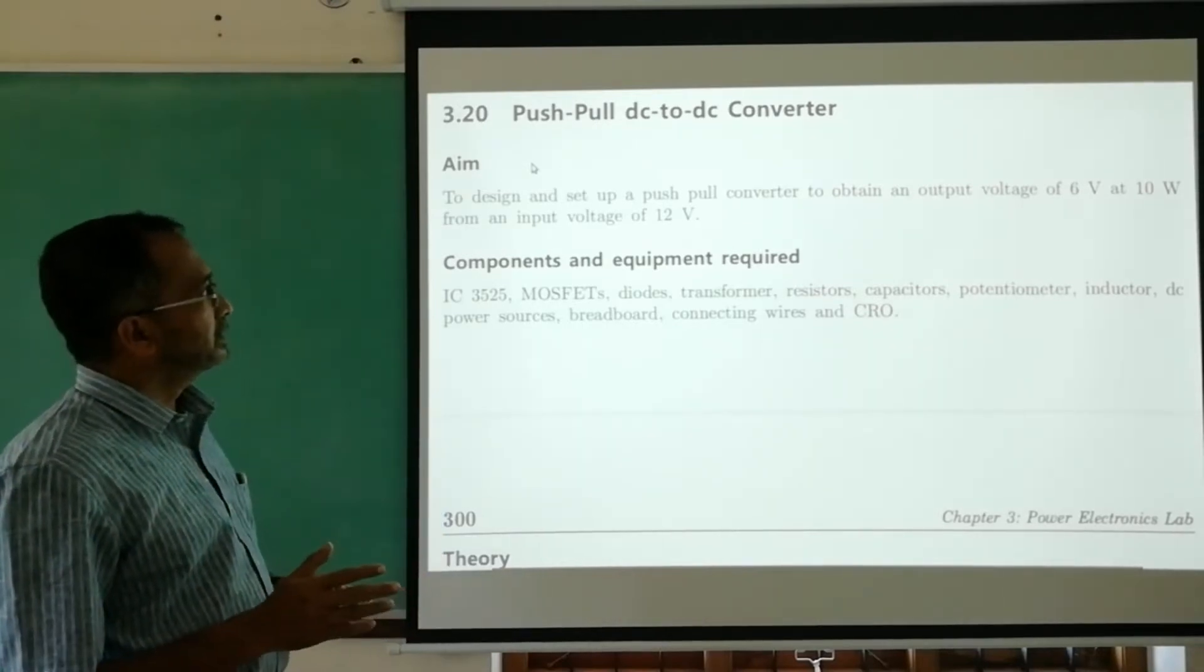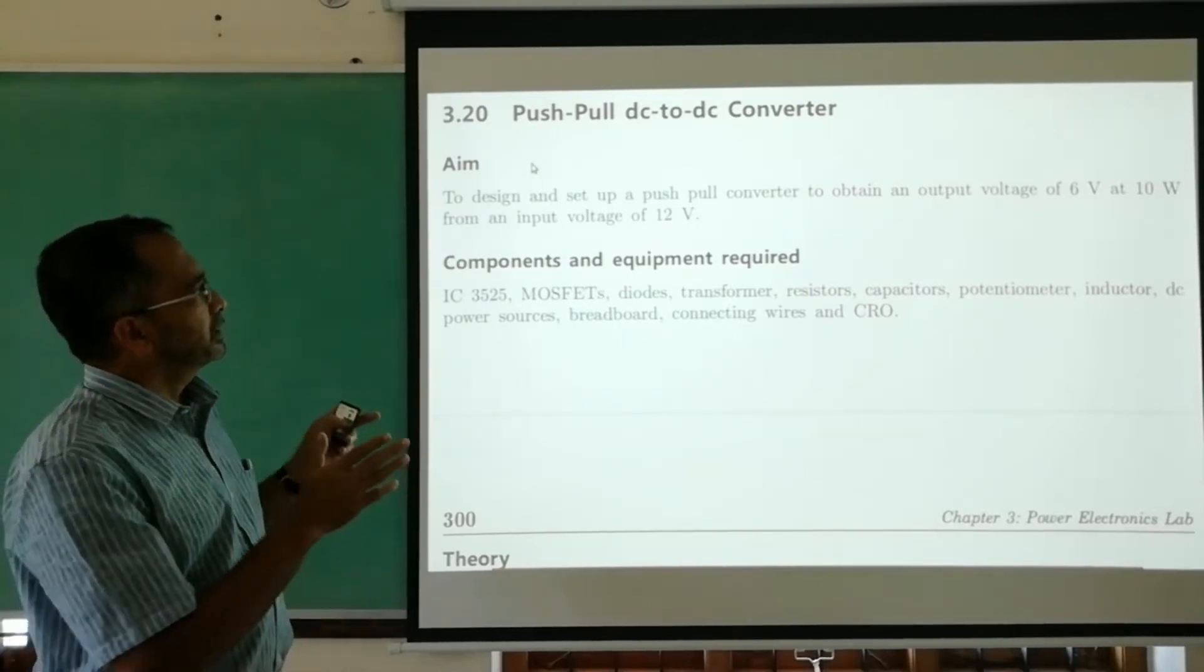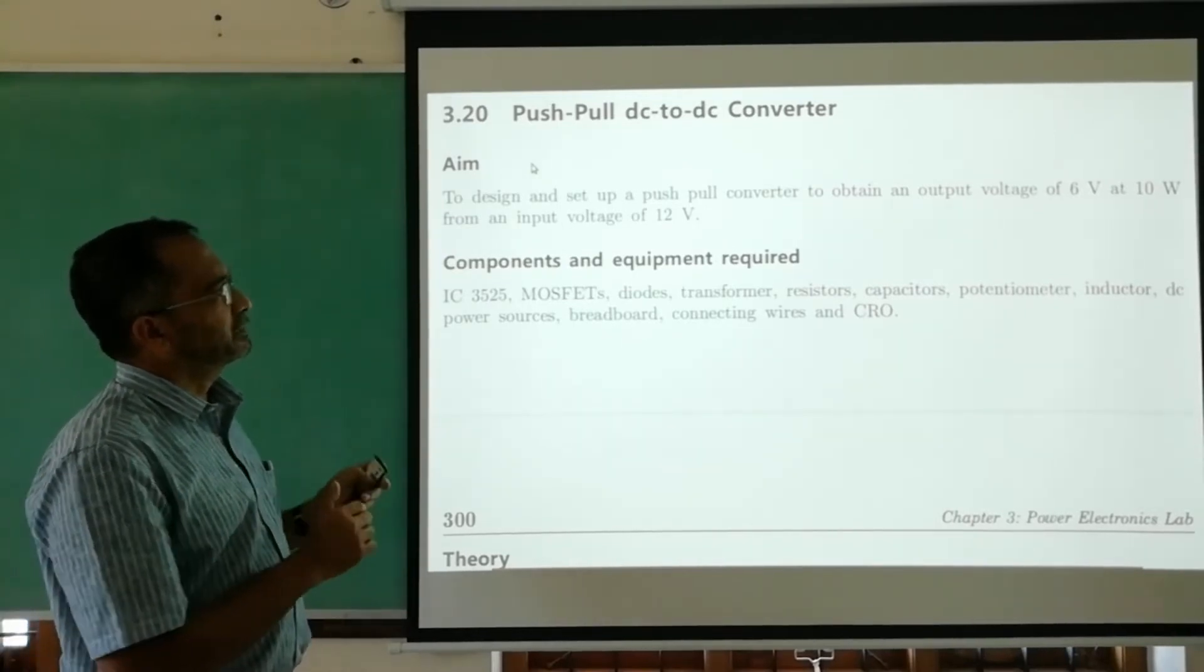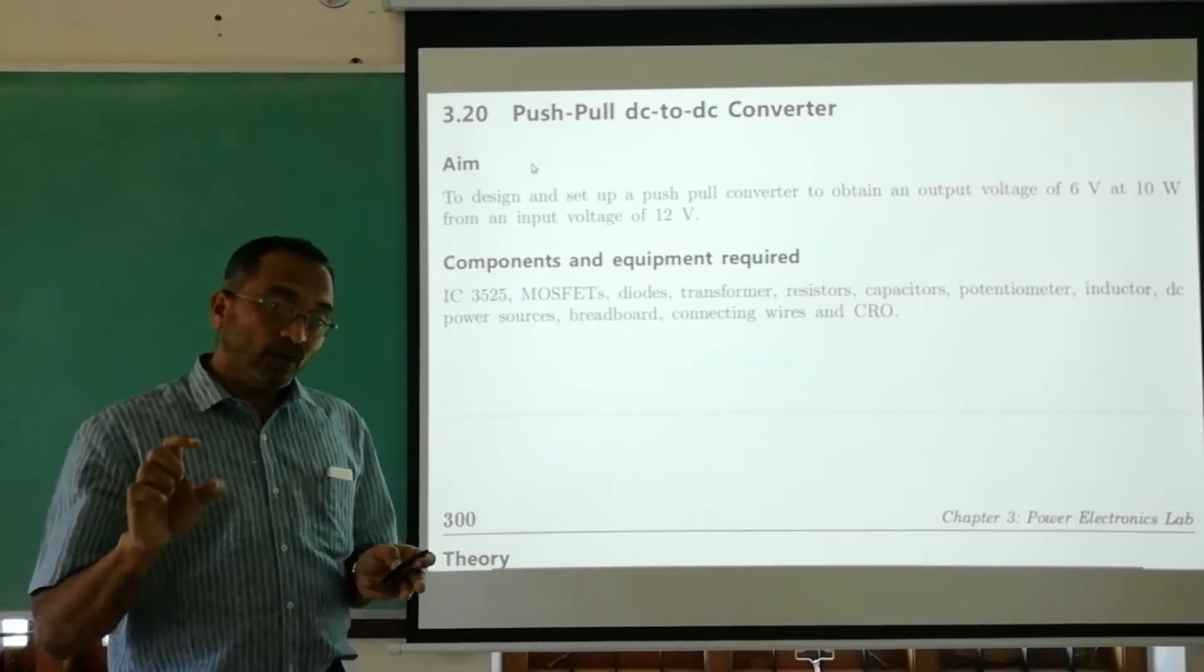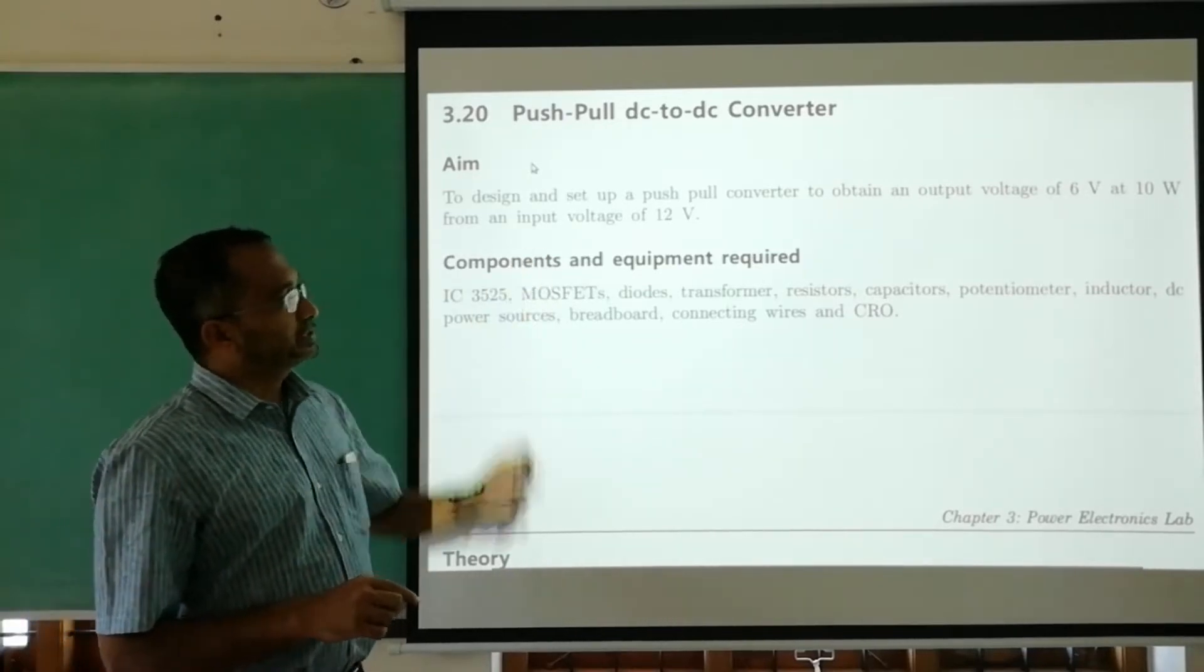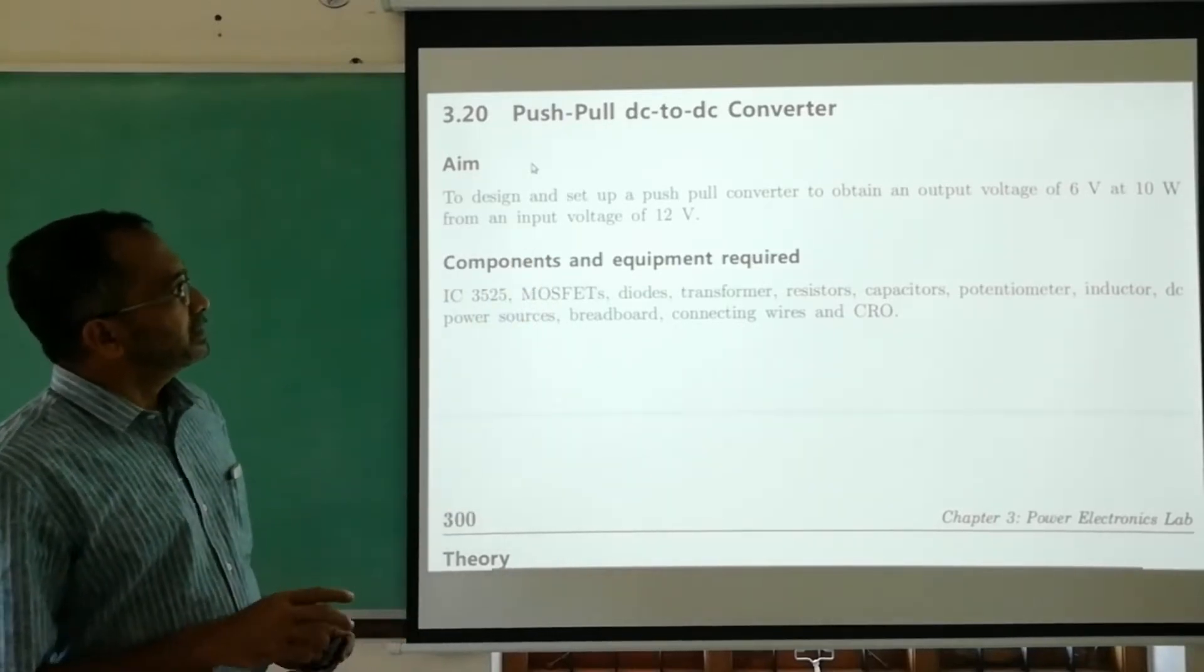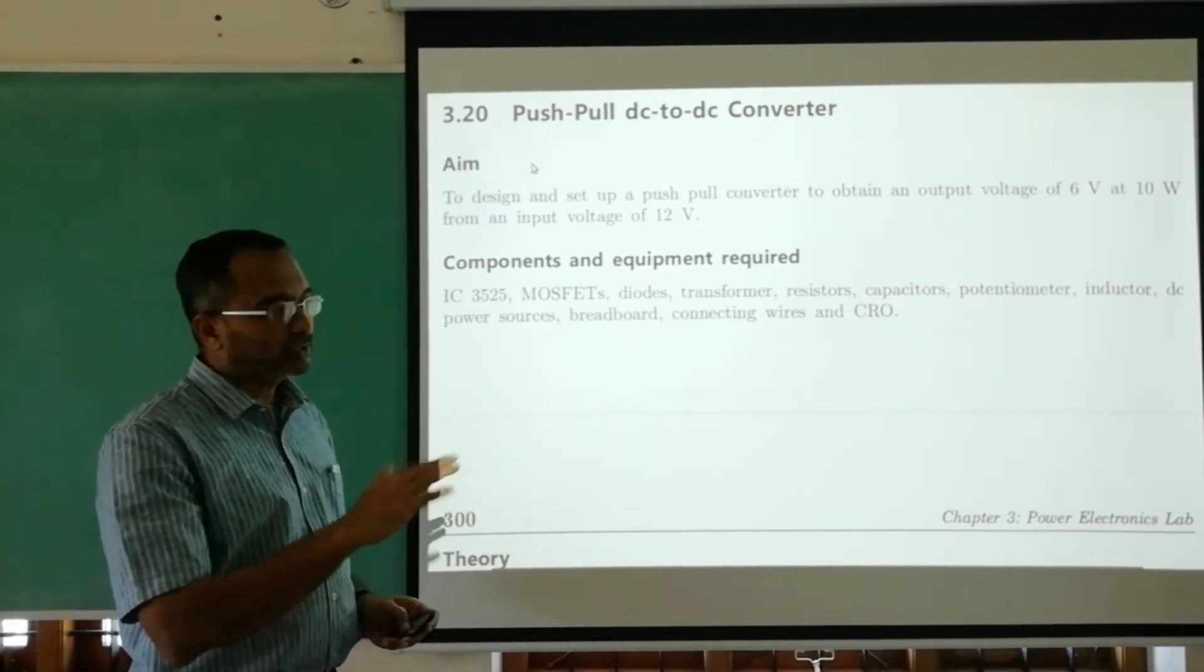The objective of this lab experiment is to set up a push-pull DC to DC converter to obtain an output of 6 volts at 10 watts from a 12 volt DC input. So we get DC at the input and DC at the output - DC to DC converter.